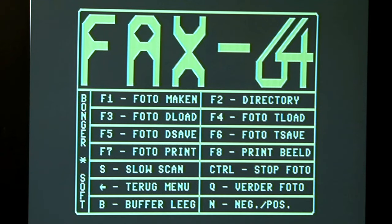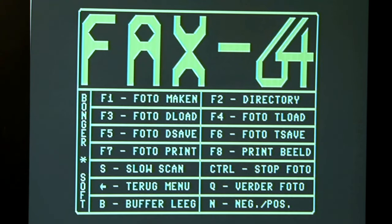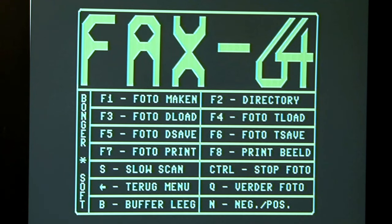Let's have a look at FACS64 and I'll explain the commands. F1 is photo making or make photo. These words are partially in English and partially in Dutch, so I had to translate them. F2 is to load the directory. F3 photo deload is to load a photo from the disk. F4 photo tload is to load a photo from a tape drive. F5 photo de-save is to save a photo to the disk. F6 photo t-save is to save a photo to the tape drive. F7 photo print is to print the photo. F8 is also to print a photo.